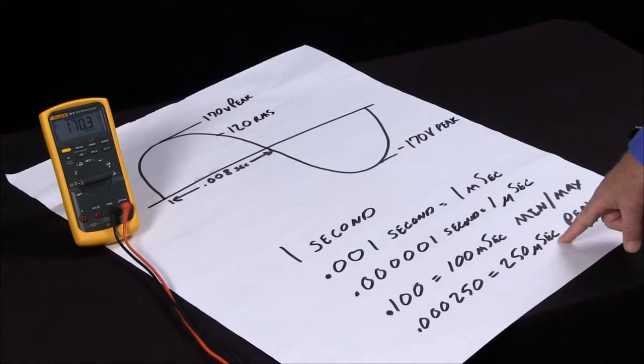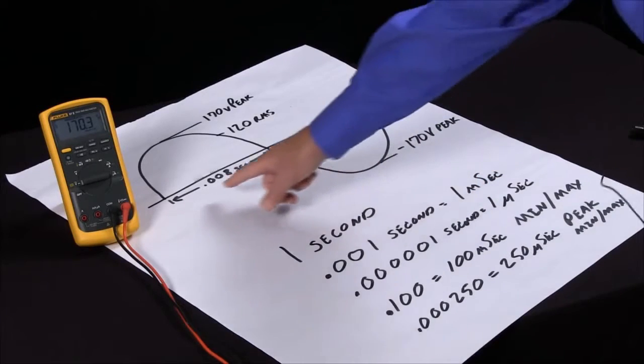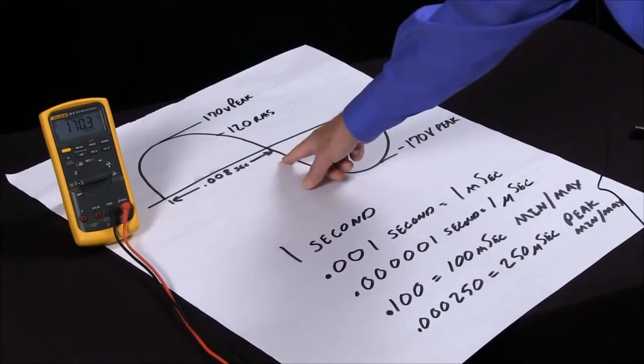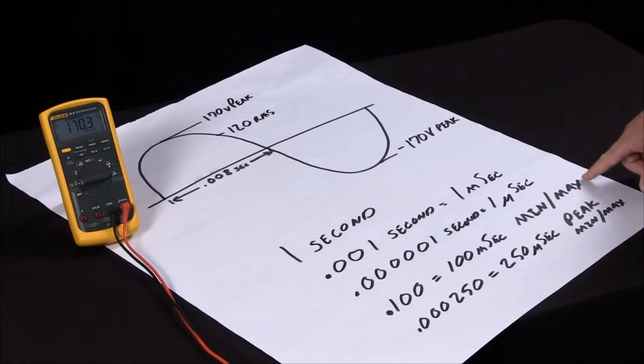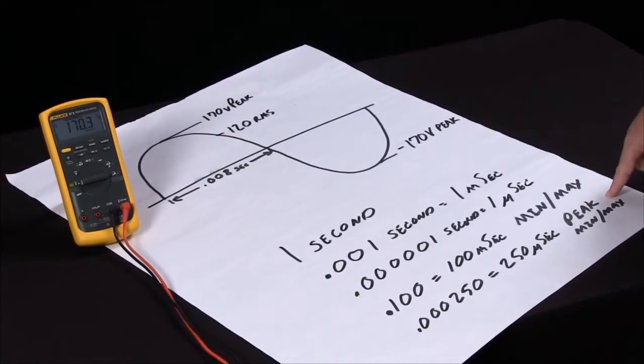When we work with a 60 hertz sine wave, half of that sine wave stretches eight milliseconds across. So my min max is not fast enough to capture transients, but the peak min max does give me that capability to capture electrical transients on different types of waveforms.